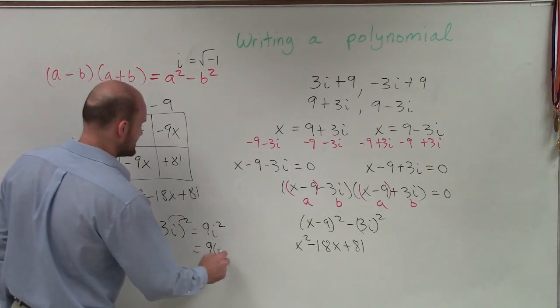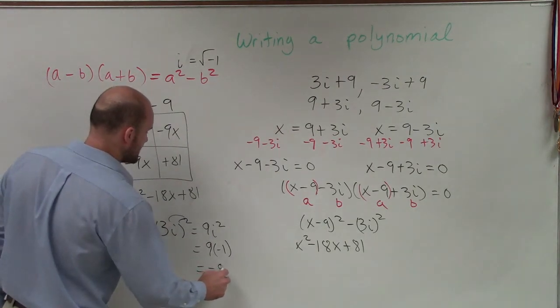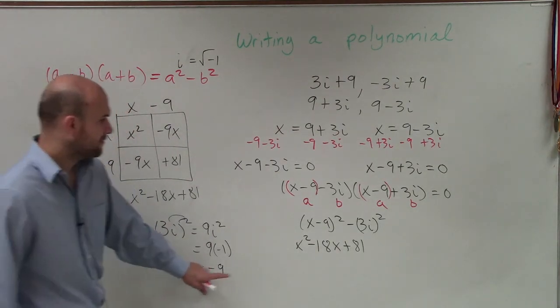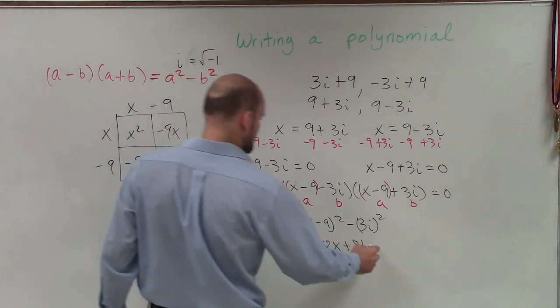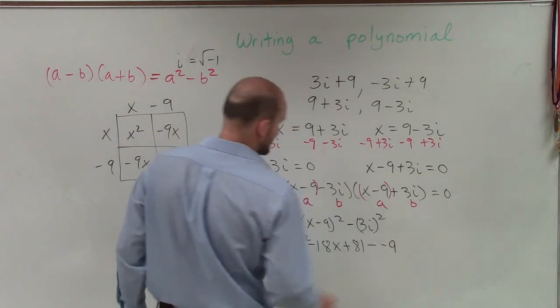Well, remember, 9i squared is 9 times negative 1, which equals a negative 9. Well, so therefore, we have a minus a negative 9.